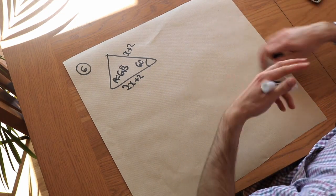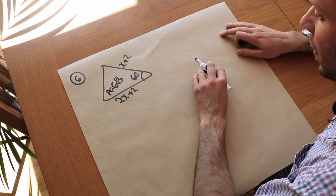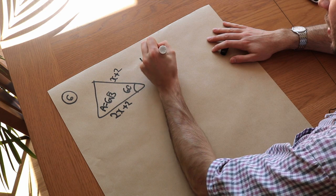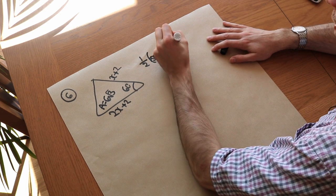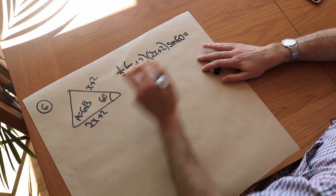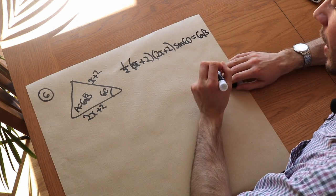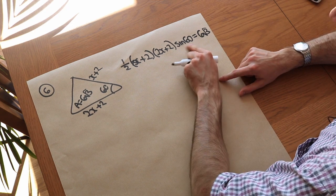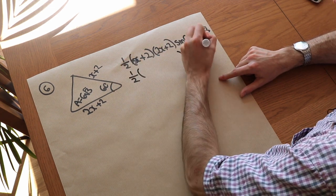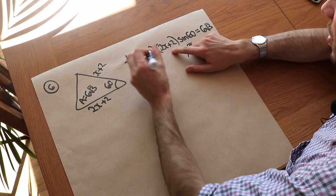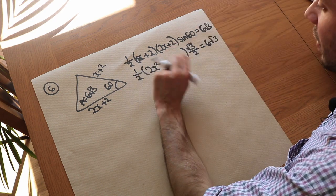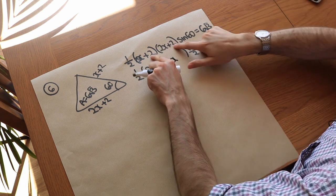We use the same formula: half times (x + 2) times (2x + 2) times sine 60 equals 6√3. Using the exact value sine 60 equals √3/2, and expanding the brackets: x times 2x is 2x², x times 2 plus 2 times 2x gives 6x, and 2 times 2 gives 4. So we have half times (2x² + 6x + 4) times √3/2 equals 6√3.